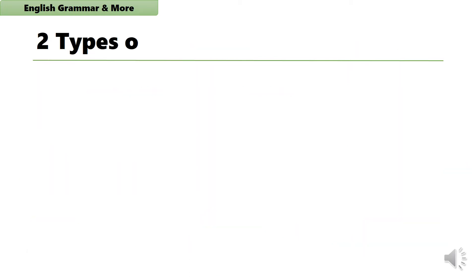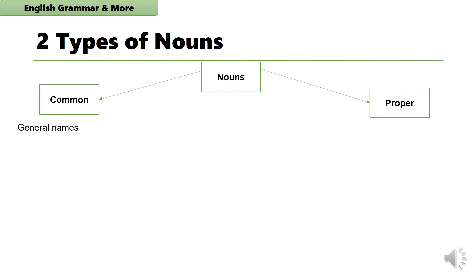Nouns can be of two types. Nouns can be common nouns and proper nouns. Common nouns are general names we give to people, things, and places.